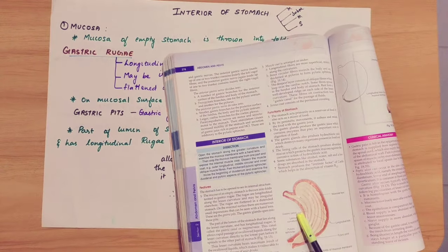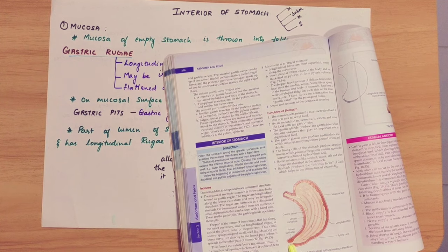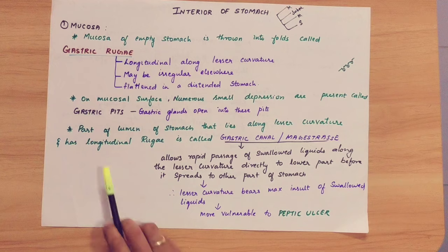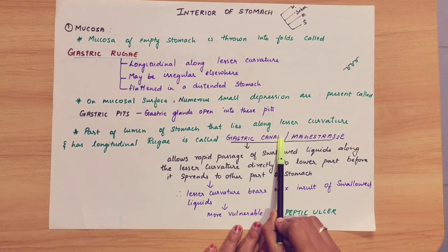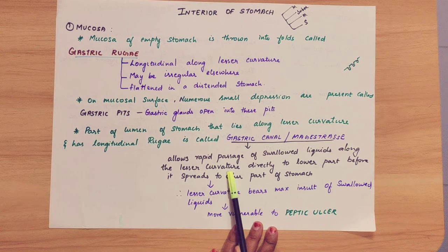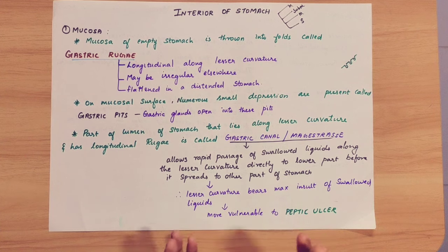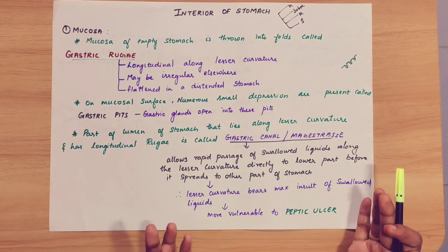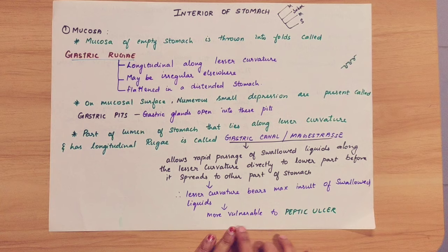The stomach spreads other contents to the other parts directly. This is why the gastric canal has a vulnerable area — it is more vulnerable to peptic ulcer. The part of the lumen of the stomach that lies along the lesser curvature and has longitudinal rugae is called the gastric canal. It allows rapid passage of liquids along the lesser curvature directly to the lower part before spreading to the other parts of the stomach. In the lesser curvature, there is exposure to a lot of alcohol, acidic, and spicy foods, resulting in more insult to the lesser curvature and a higher chance of peptic ulcer.